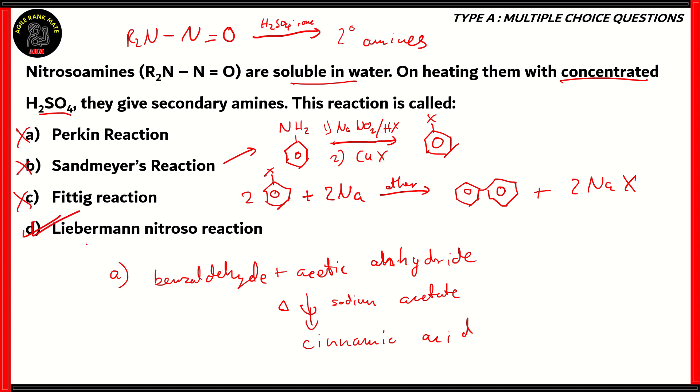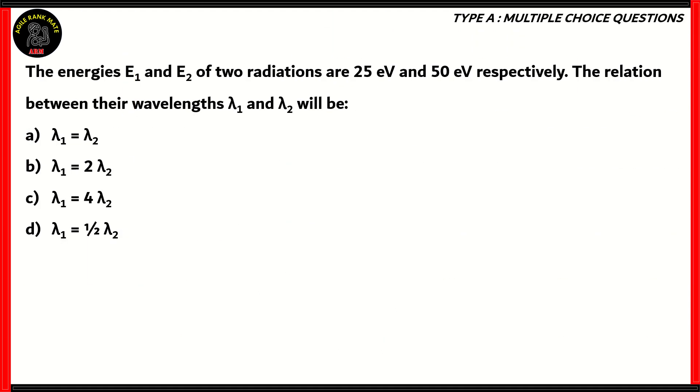So therefore the only correct option is option D, Liebermann nitroso reaction. In Liebermann nitroso reaction, nitroso amines on heating with concentrated H2SO4 gives secondary amines. So option D is the correct option.